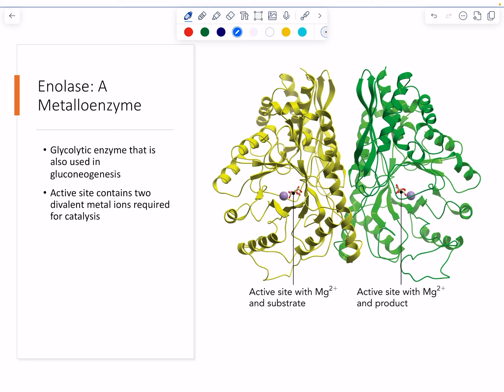Enolase is an enzyme in glycolysis, so it's a glycolytic enzyme, and it acts as a dimer. The protein is shown here in the figure with one chain in yellow and one chain in green. This figure was created to show you two views of the active site: one with the substrate, which is 2-phosphoglycerate, a phosphorylated 3-carbon compound, and its product, which is shown bound to the active site on the right, phosphoenolpyruvate.